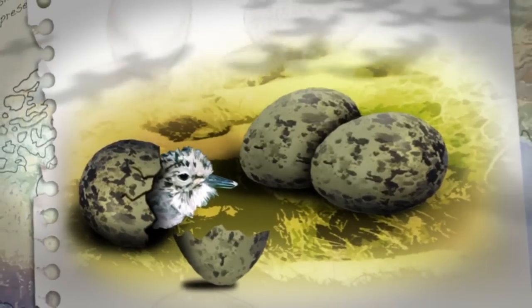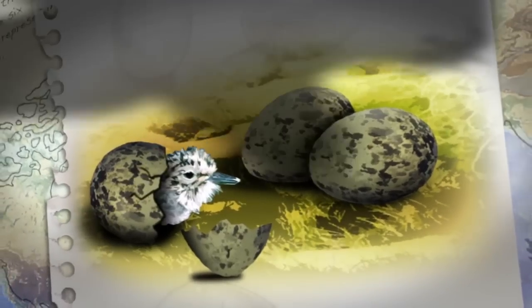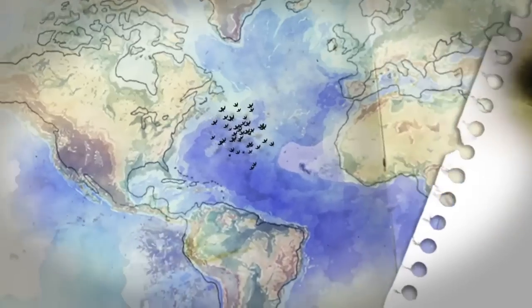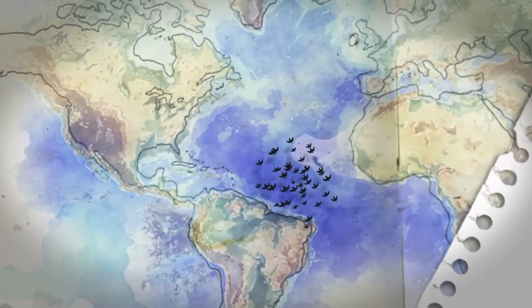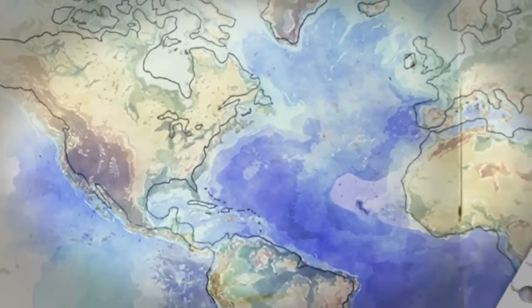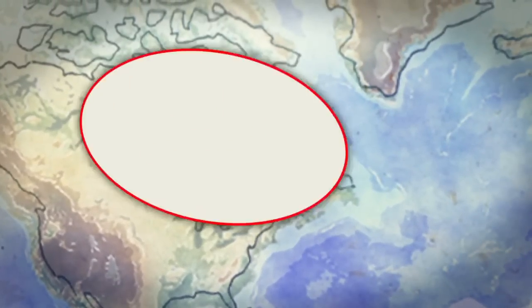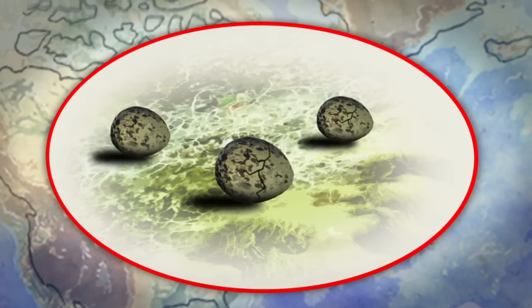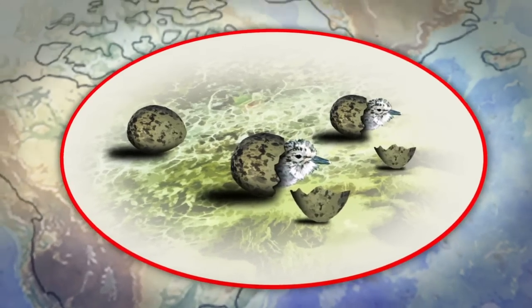They avoid the migrations of predatory birds that will be taking the same flyway a few weeks later. Unfortunately, the same cannot be said for their young, who will have to contend with these predators during their own migration. The females will remain a few weeks ahead of the others all the way along the flyway.